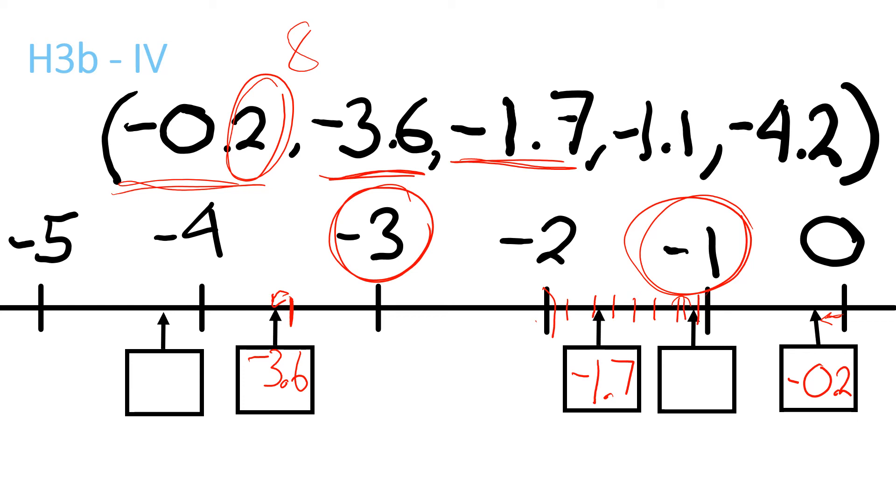And then we have minus 1.1, which we go to find minus one first, and point one would be one space back. So minus 1.1. Minus 4.2, we've got to find minus four, and then you've got to go back about two spaces. So one, two, minus 4.2.